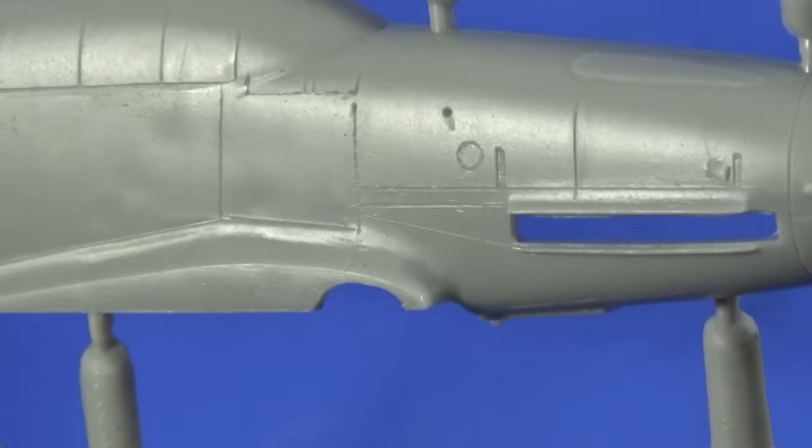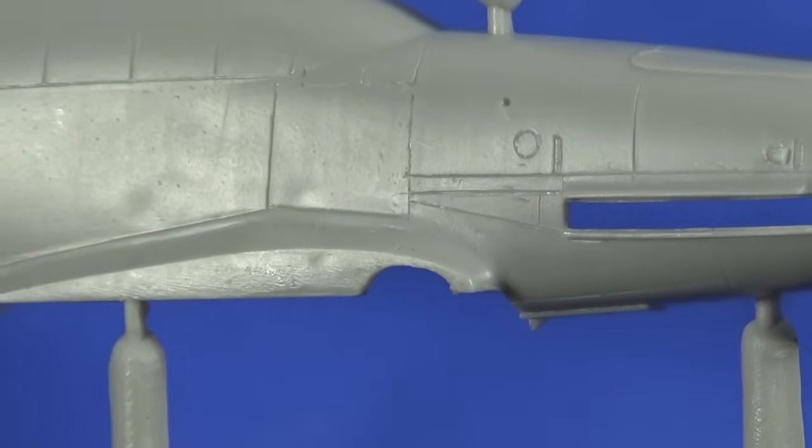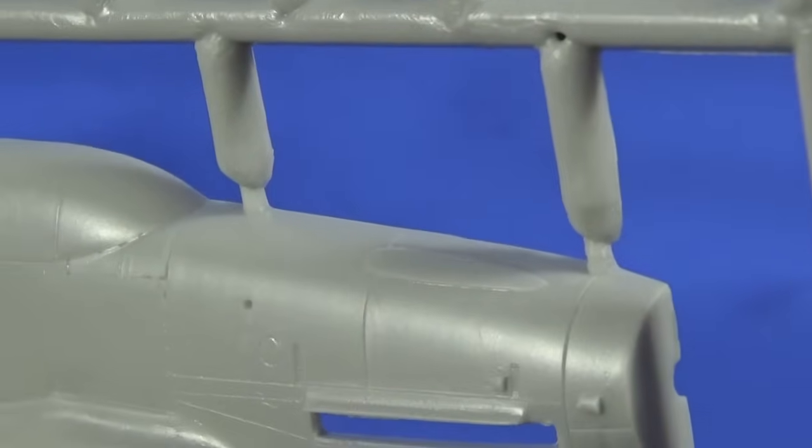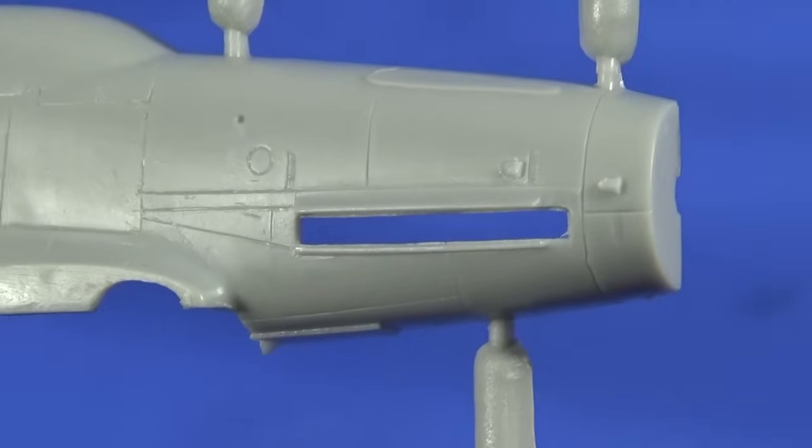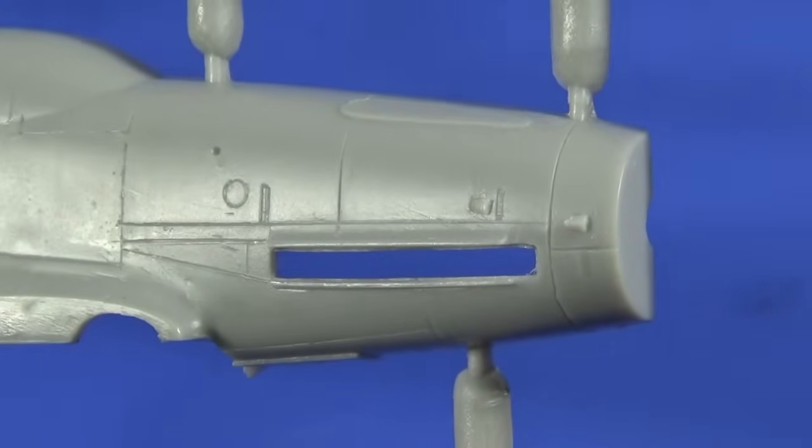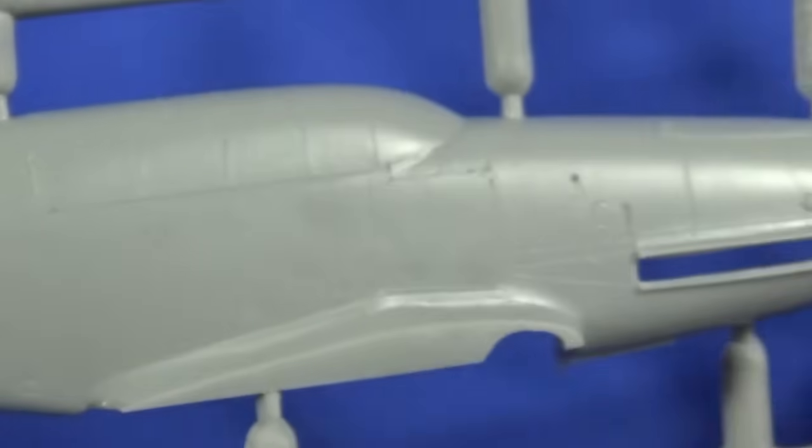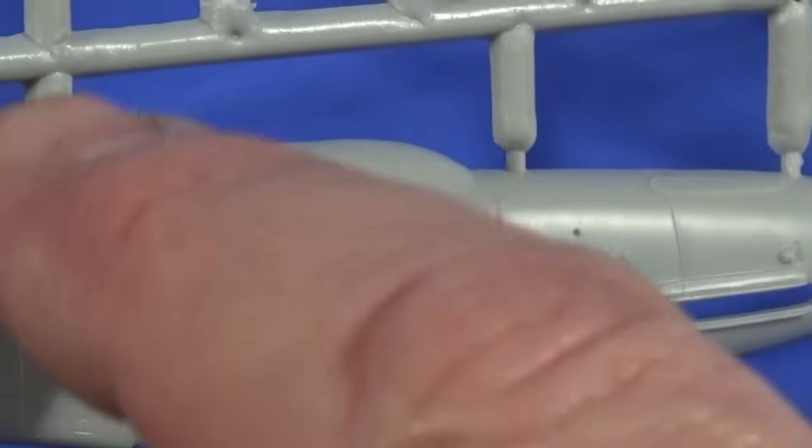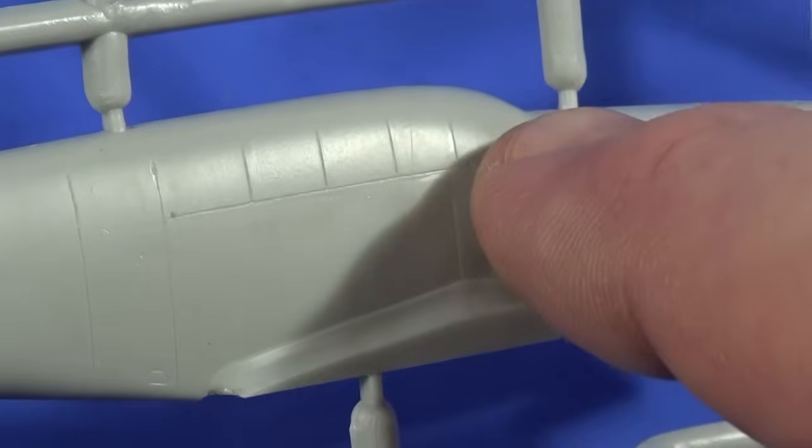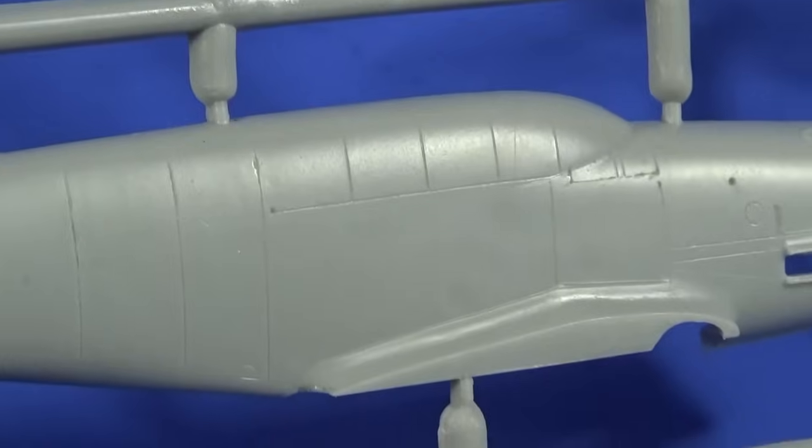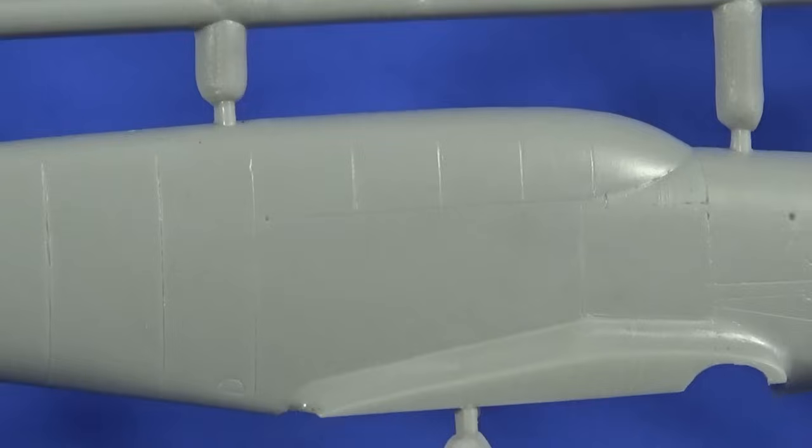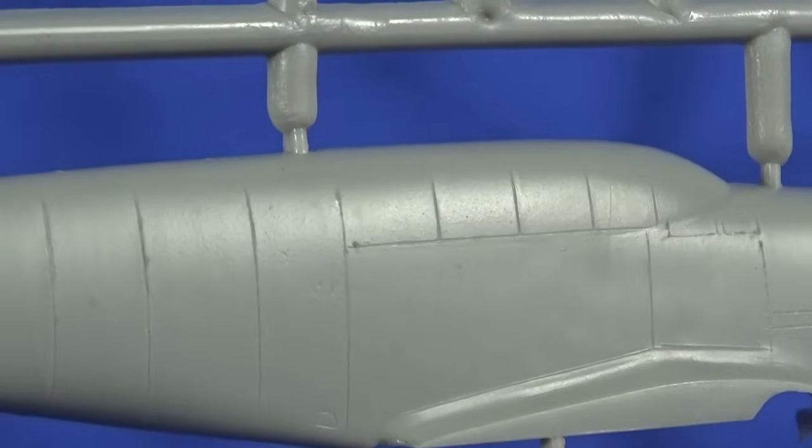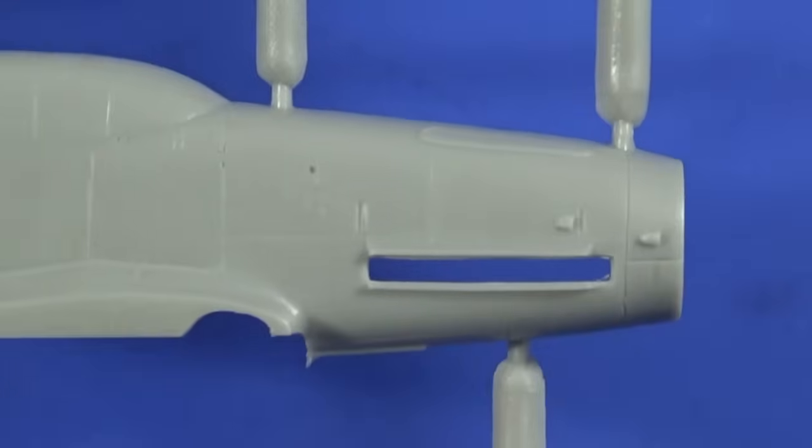If we have a closer look at the plastic, it's okay. I mean the scribing is reasonably basic but it is at least sunken, it's not raised panel lines, they are sunken lines which is something. But as you can see they do look a bit basic and a bit scratchy. But it's 1/72nd, I'm sure we can do something with it.